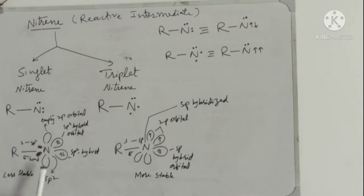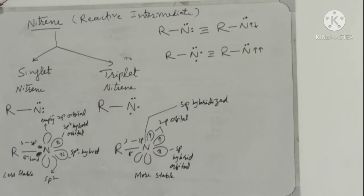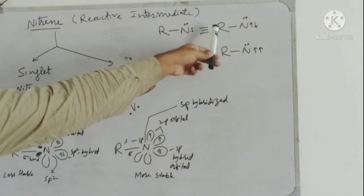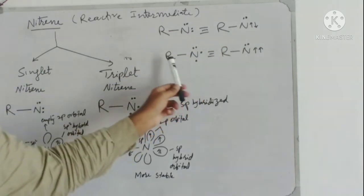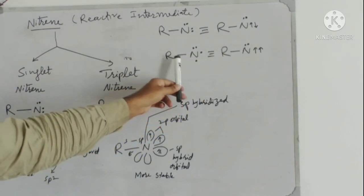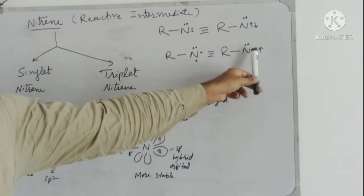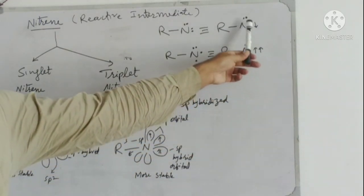Singlet nitrenes are located at higher energy, whereas triplet nitrenes have lower energy. These two species — singlet nitrenes and triplet nitrenes — can be represented showing the electrons of the singlet as a lone pair with anti-parallel spin, and the two unpaired electrons of the triplet nitrenes as parallel spin, shown with arrows on the same side.